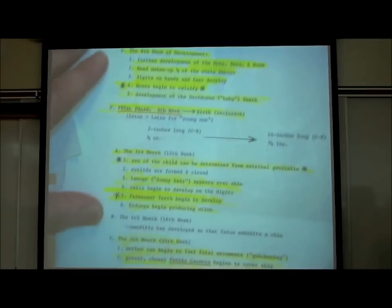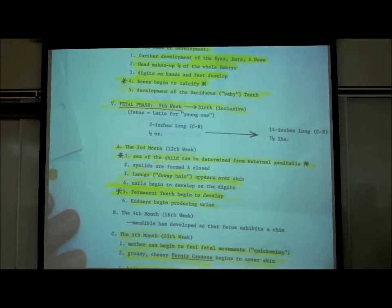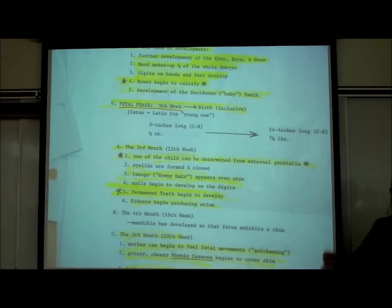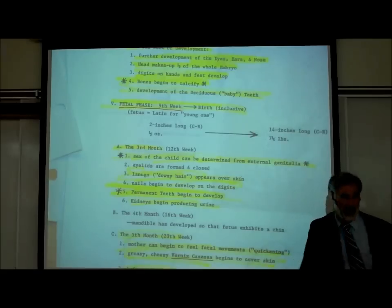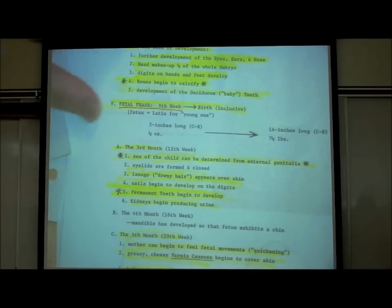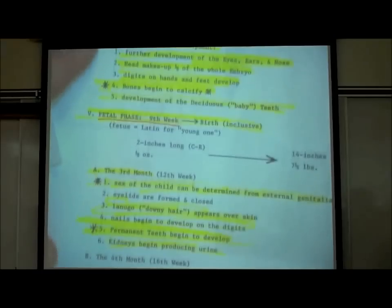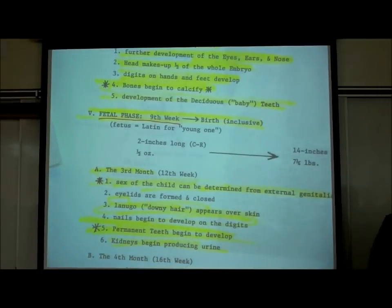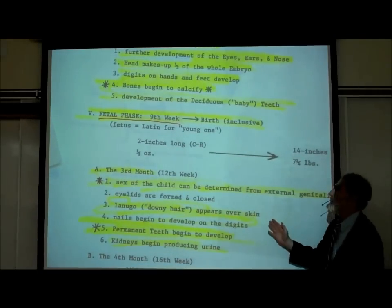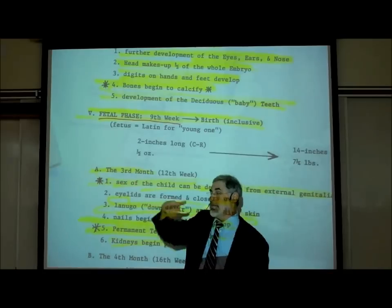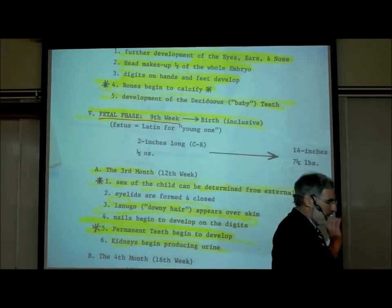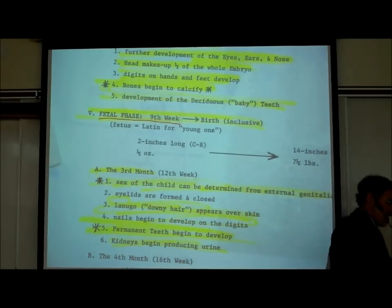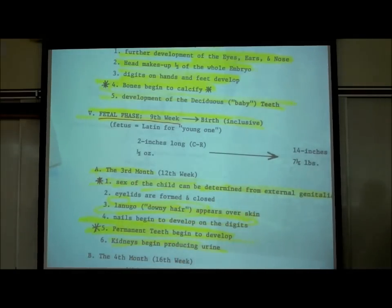The fetal phase: the pre-embryonic phase was the first three weeks, the embryonic phase was the fourth through eighth weeks, so the fetal phase begins with the ninth week until birth. We start to use the term fetus beginning with the ninth week — you should know that.